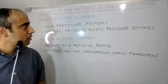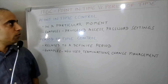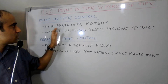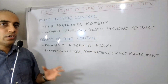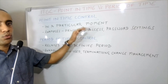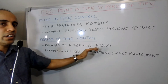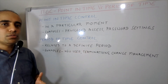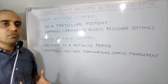Quick recap: point in time controls, as the name suggests, relate to a particular moment. Examples are privilege access and password settings — things captured as a snapshot of time, such as settings or accounts at a given moment. Period of time controls relate to a definite period, as the name suggests. Examples are new user provisioning, terminations, and change management — control areas that involve a definite time period for testing.